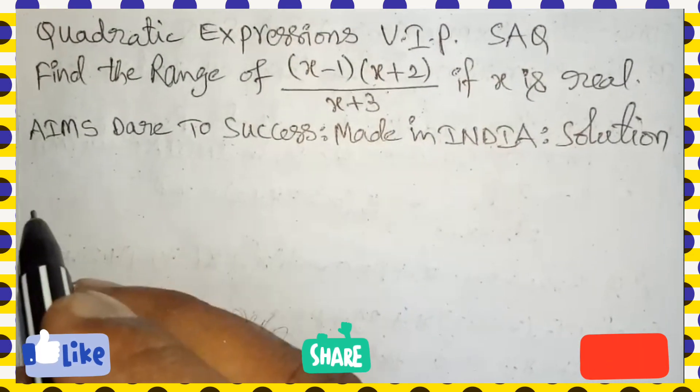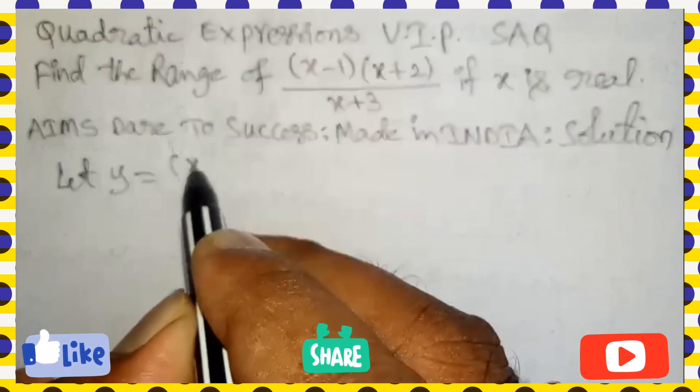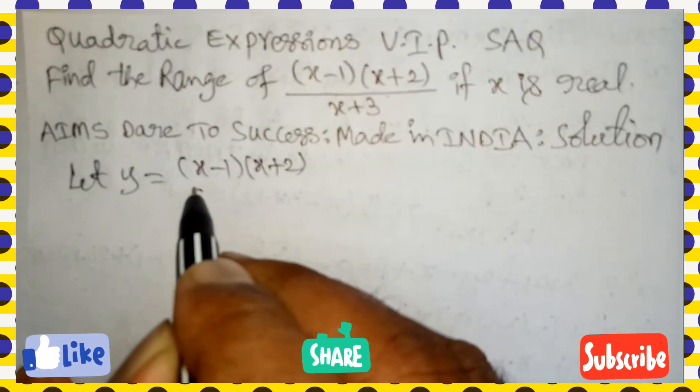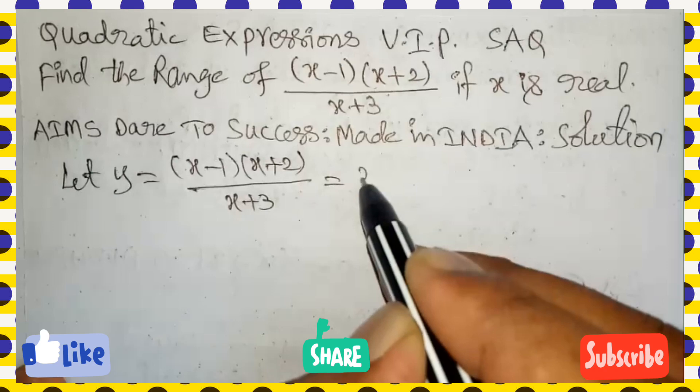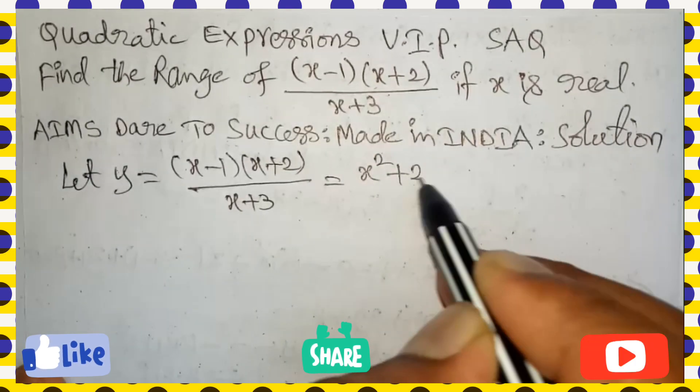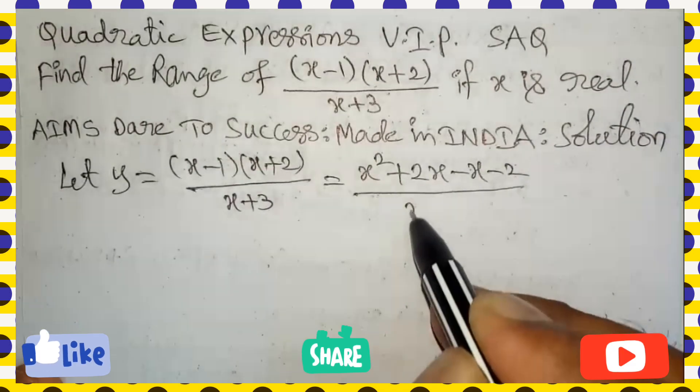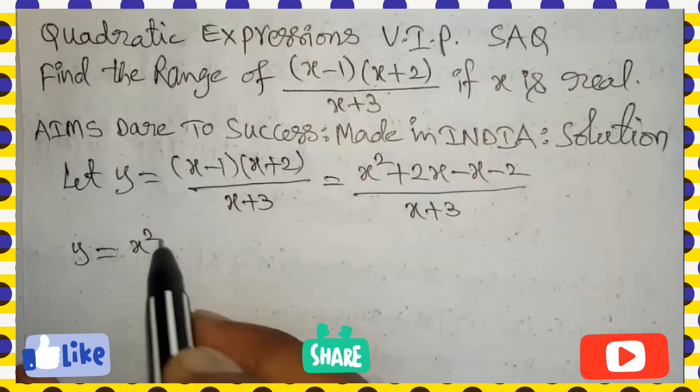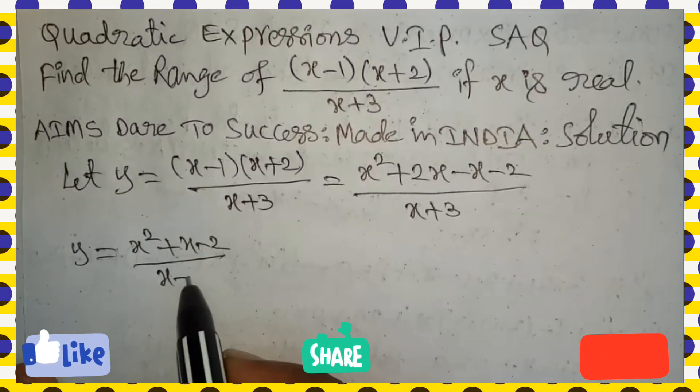Let the given value be written as y. So, let y equals (x-1)(x+2) divided by (x+3). In the numerator you can multiply: x into x is x square, plus x into 2 is 2x, minus 1 into x is minus x, minus 1 into 2 is minus 2, all divided by x+3. So this can be written as y equals x square plus 2x minus x is x minus 2, divided by x+3.